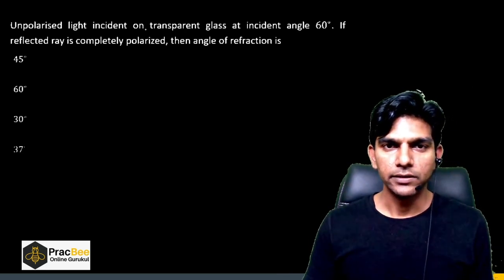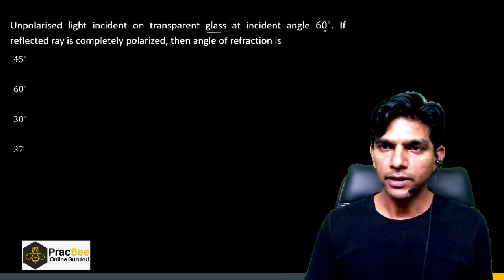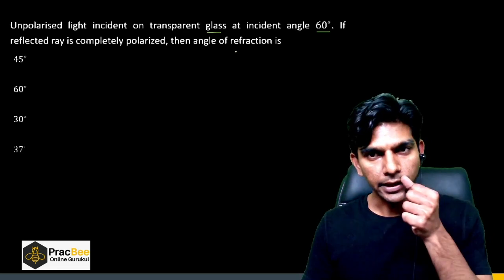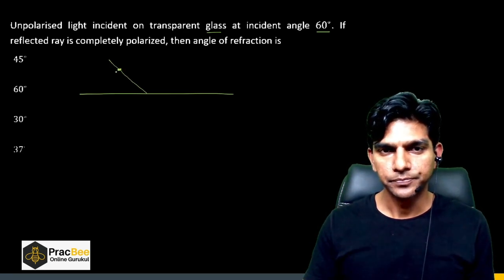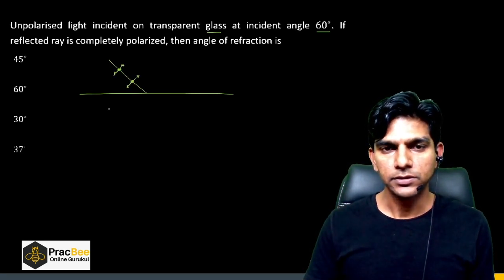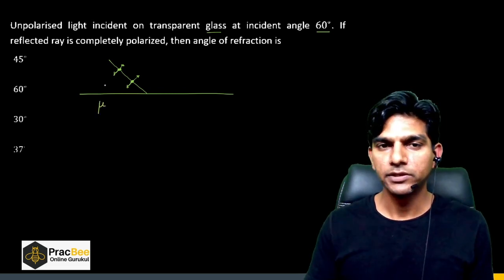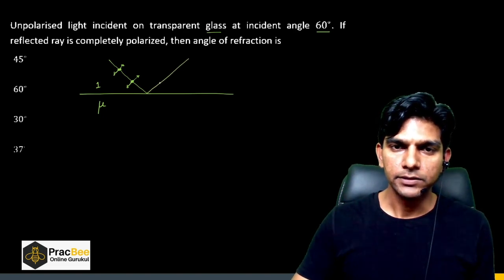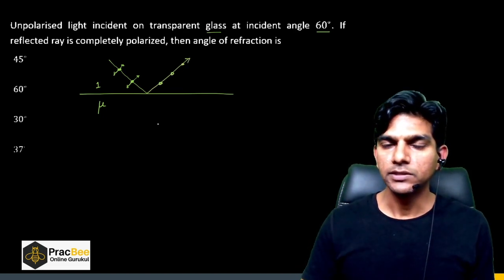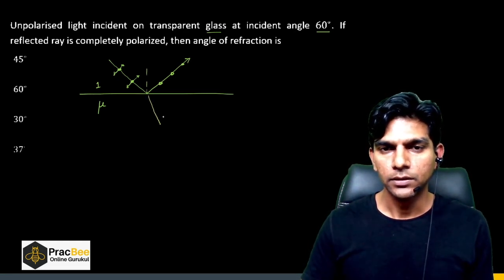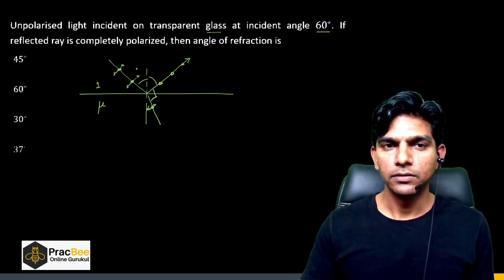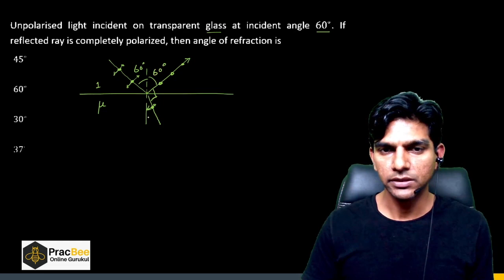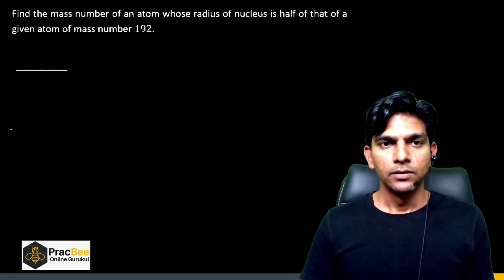The next question is from Wave Optics — Brewster's law. Unpolarized light is incident on transparent glass at an angle of 60°. The reflected ray is completely polarized. According to Brewster's law, the reflected and refracted rays are perpendicular to each other. The angle of incidence is 60°, angle of reflection is 60°, and since the refracted and reflected rays are 90° apart, the angle of refraction is 90° − 60° = 30°.